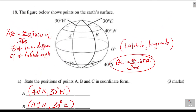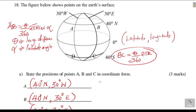Remember the formula uses the latitude difference: 40 plus 40 equals 80, then multiply by 2 pi R. Now from B we move to C to D. C to D is a distance along the parallel of latitudes, or the small circle.